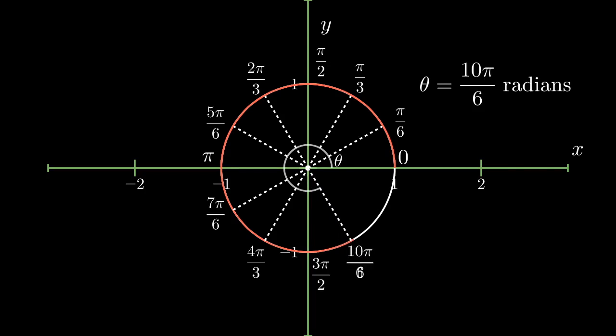Adding another sixth onto that gives us 10π/6 radians, or just 5π/3 radians. Moving to this next angle gives us 11π/6 radians. And finally, moving this last little bit gives us 12π/6 radians, or just 2π radians.